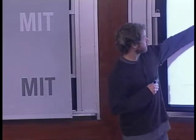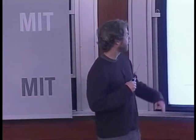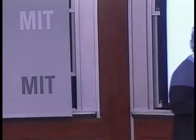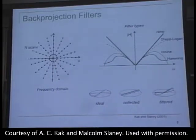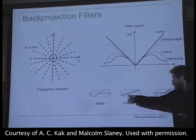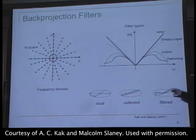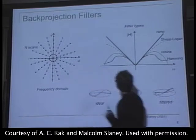You can notice that it's very highly sampled in the DC region, and out in the high-frequency region there are few data points. In the ideal case we want even sampling throughout the distribution, but this is actually what we collect with a discrete number of pixels. Different filter types try to weight the higher-frequency regions so we end up with a nicely reconstructed image without a lot of blurring due to the high dependence on the DC terms.